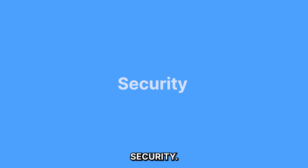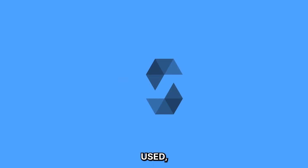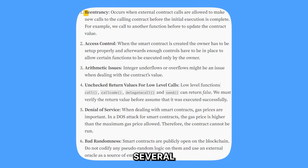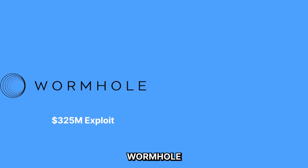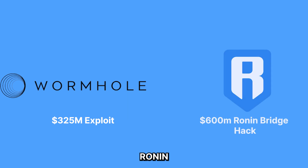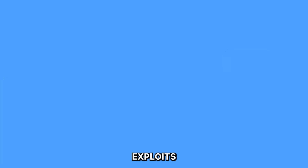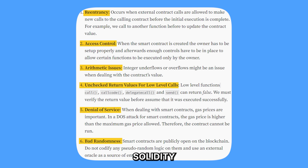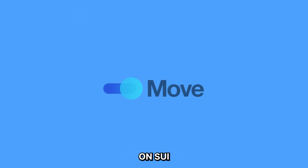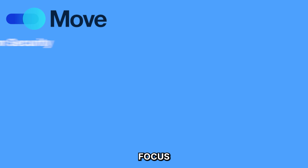Let's start with security. Although Solidity is so widely used, it is also notorious for having experienced several exploits that have caused a lot of financial harm to users of Solidity-based smart contract decentralized applications. A few exploits on Solidity-based contracts include the $325 million Wormhole exploit and the $600 million Ronin bridge hack. These exploits could be the result of several reasons, like re-entrancy attacks or hidden bugs due to the compiled nature of the Solidity language.